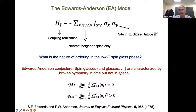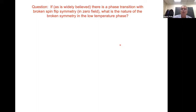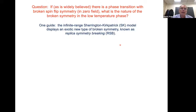Zero magnetization and non-zero Edwards-Anderson order parameter was suggested by Edwards and Anderson as the signature of a spin glass. Now let me turn to the question of: if there really is a phase transition with broken spin flip symmetry, what is the nature of the broken symmetry in the low temperature phase? Our one guide to this is basically the problem that Parisi solved, which is replica symmetry breaking.